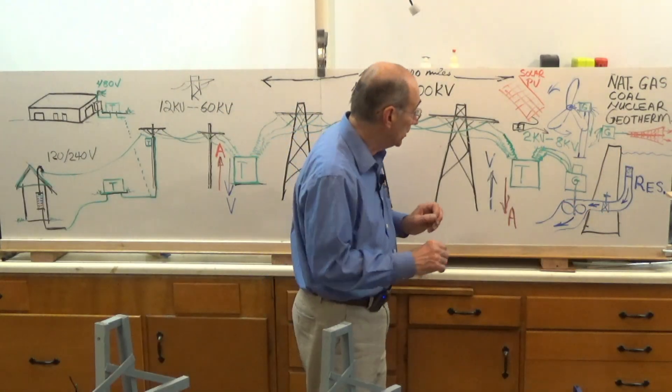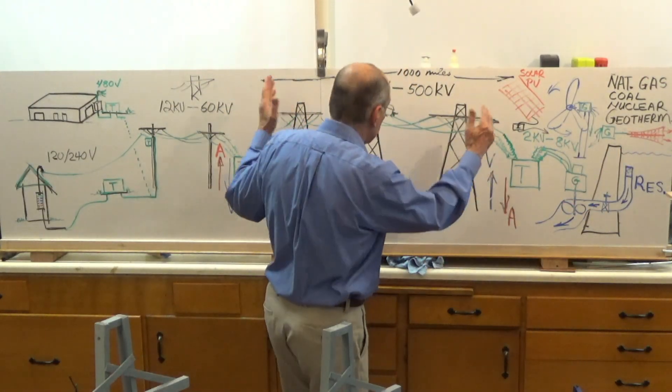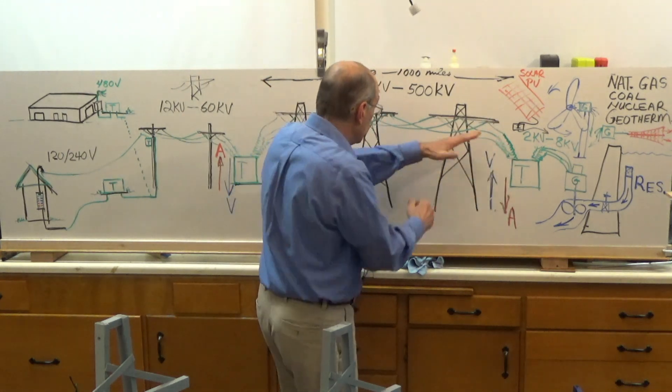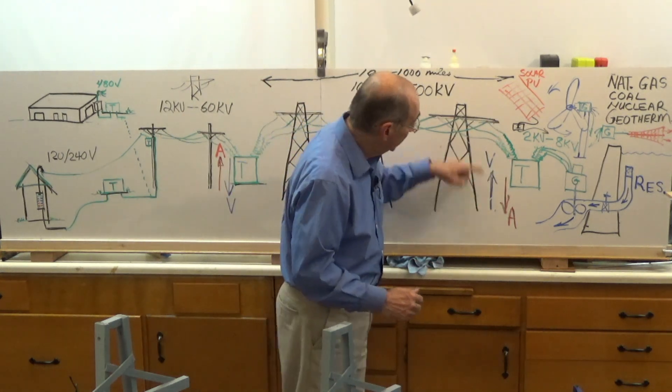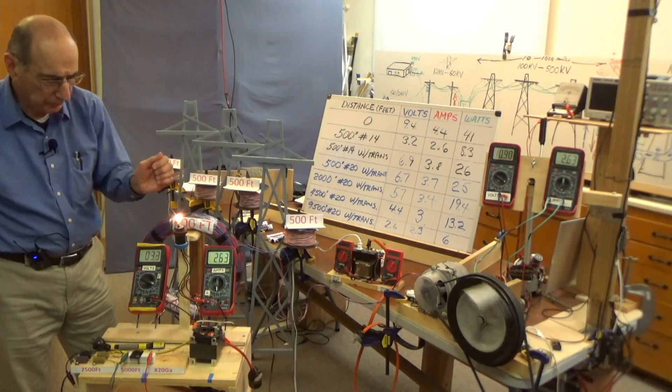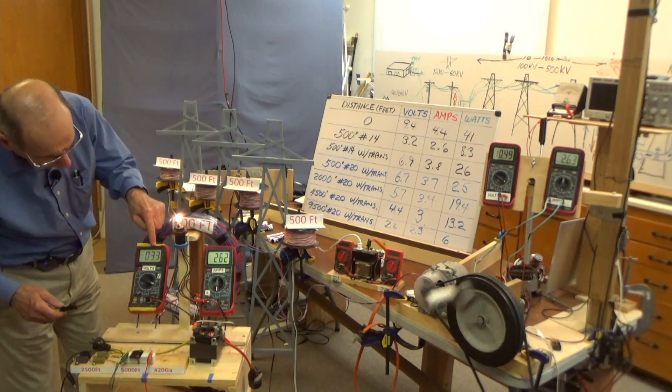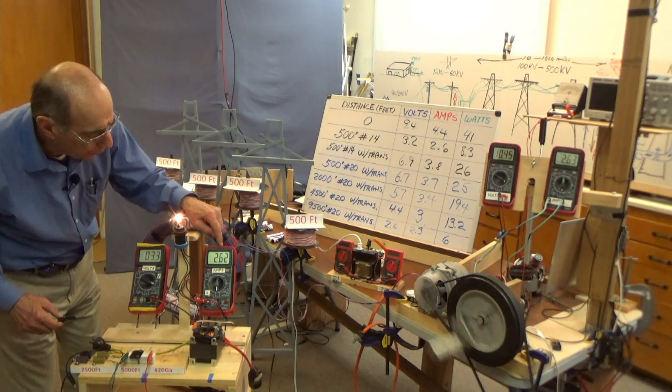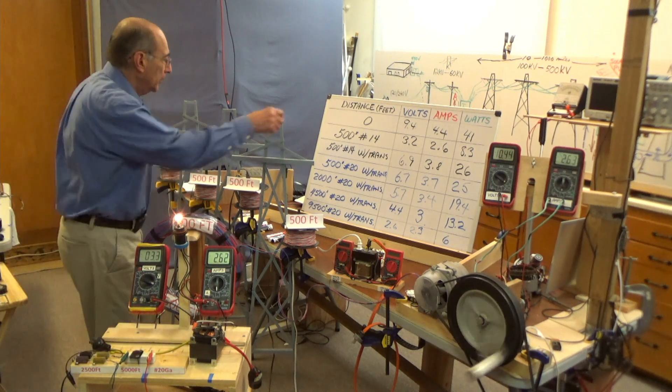What that means is, I can either, given a certain situation, certain size wire, if I increase to the right. What are we getting? 3.3 volts, 2.6 amps. That's this one here.